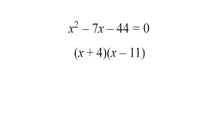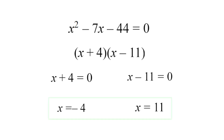Now that we know those two factors work, we set each one equal to zero — because zero times any number equals zero, and if one of them equals zero, that will work. With some addition and subtraction, we get our two solutions: x equals negative 4 and x equals 11.